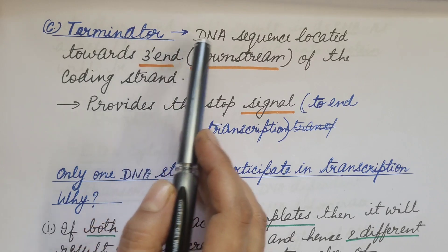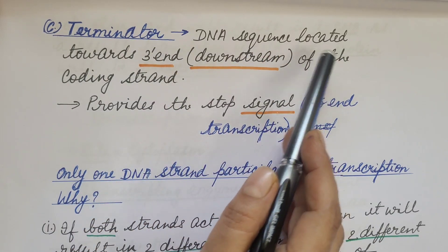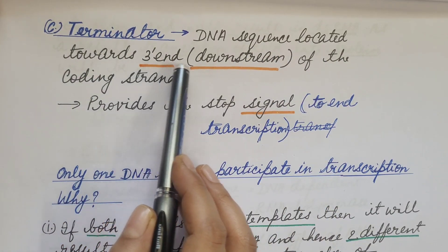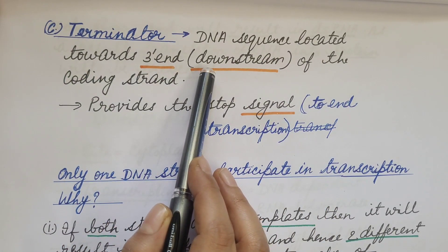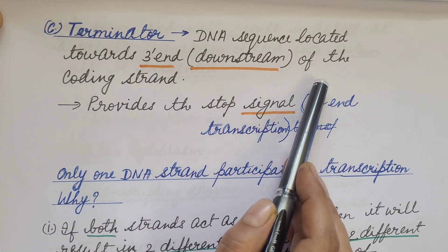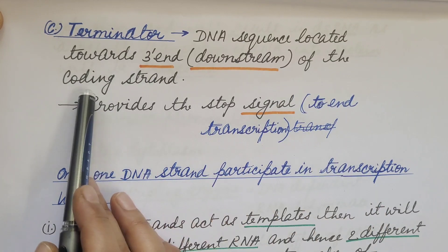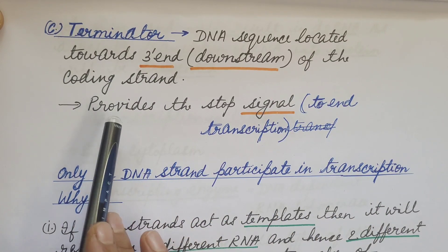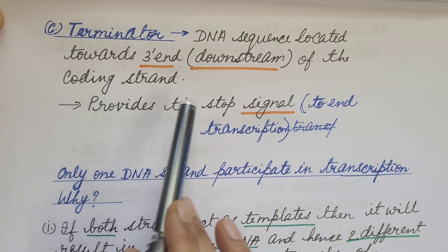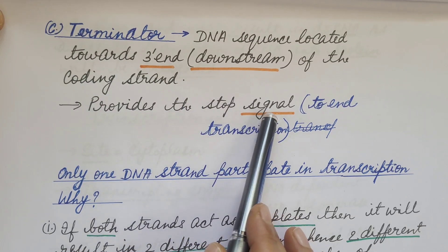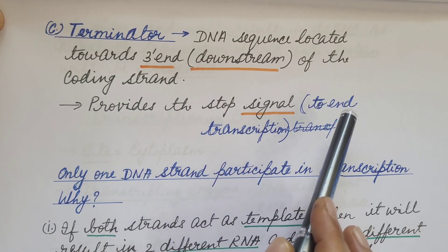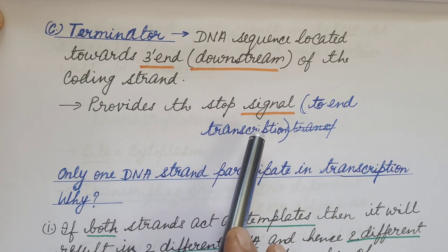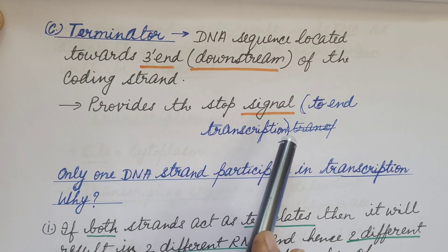Third is the terminator. The DNA sequence located towards the 3' end — that is, downstream of the coding strand — is known as the terminator. It provides the stop signal in order to end or stop transcription.